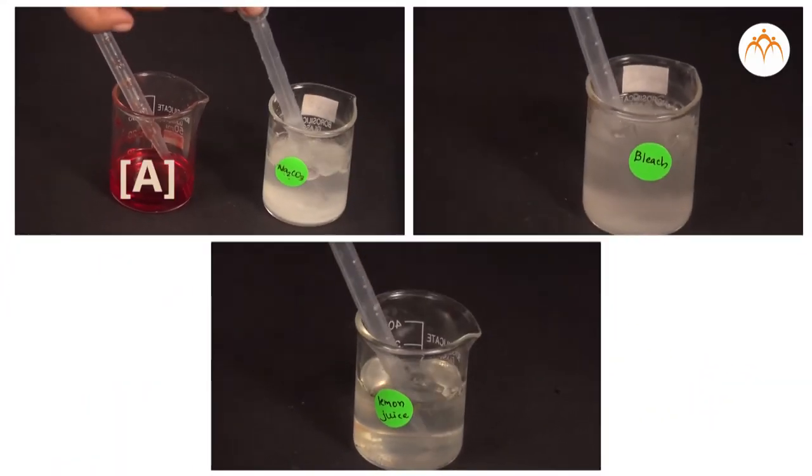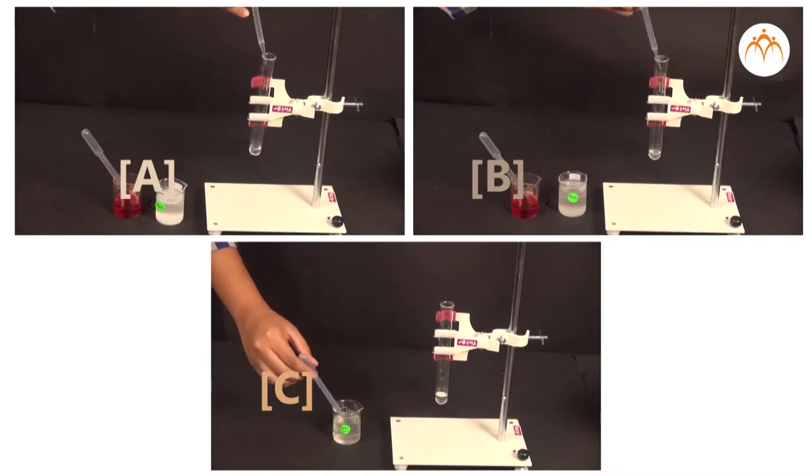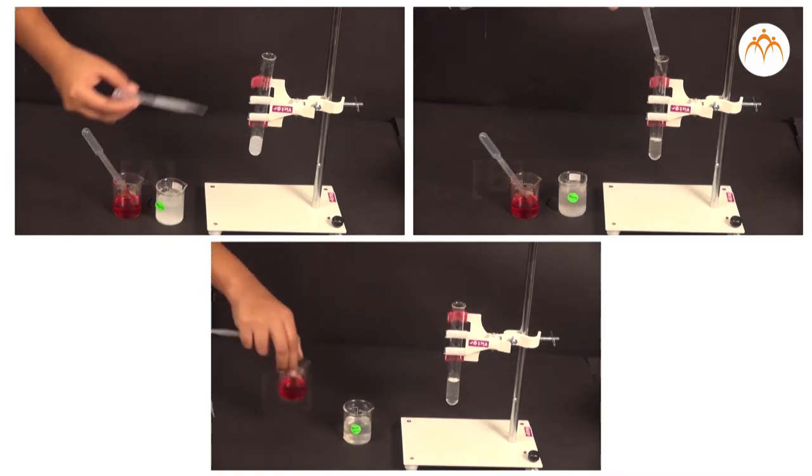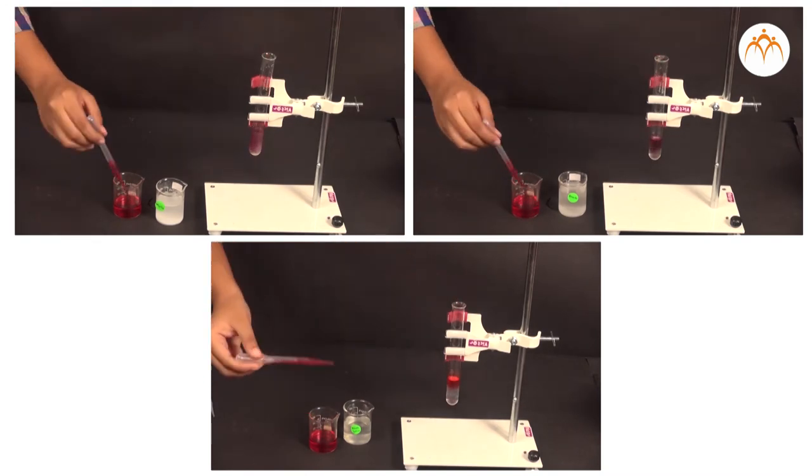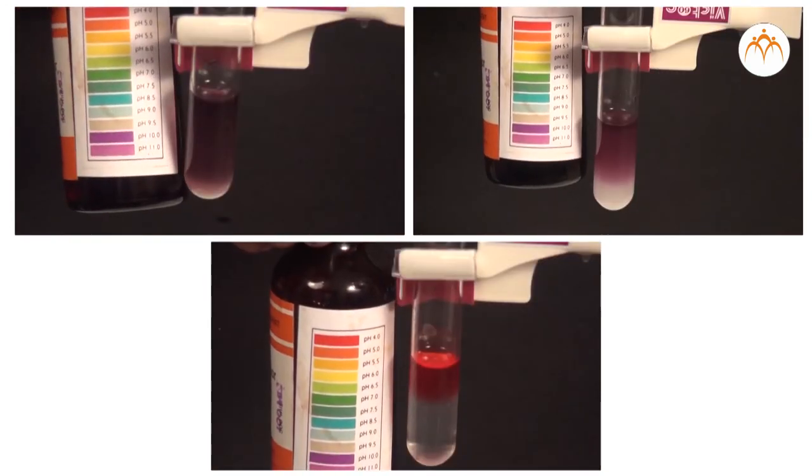We are taking solutions A, B, and C in 3 test tubes respectively. We tested the solutions with the help of any one of the indicators and noted the observations in an observation table.